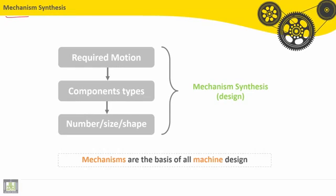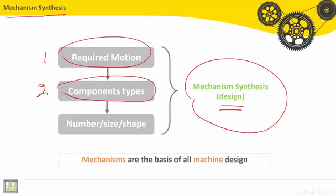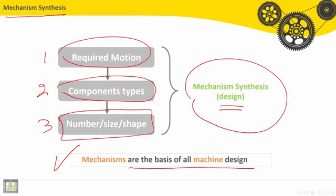A mechanism synthesis is also the design. The steps are the following: First one is to find out the required motion. Second one is to understand the component types. Third one is to find the number, the size and shape of each component. So mechanisms are the basis of all machine design.